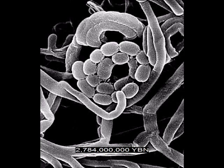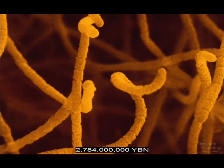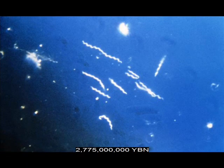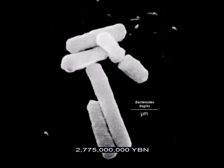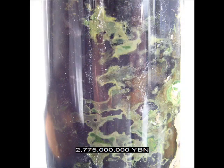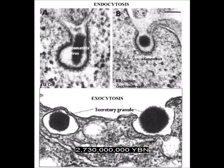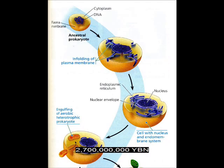Eubacteria actinobacteria — gram-positive, source of streptomycin. Eubacteria spirochetes: syphilis, Lyme disease. Eubacteria bacteroidetes. Eubacteria chlamydiae evolve. Eubacteria chlorobi — green sulfur bacteria. Eubacteria verrucomicrobia. Endo and exocytosis evolve — cells can now eat other cells. In endocytosis, the plasma membrane folds inward to bring substances into the cell. In exocytosis, substances contained in vesicles are discharged from the cell.